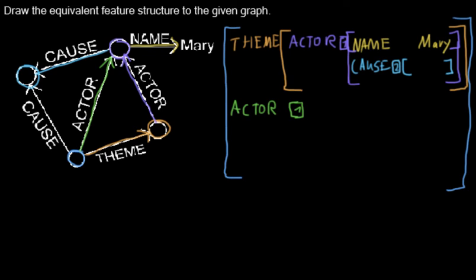Then we have another property left for the root node which is called CAUSE. And CAUSE points to this node where I also added a pointer to. So I will just write down the pointer here. And I am done. And this is the feature structure to this graph.